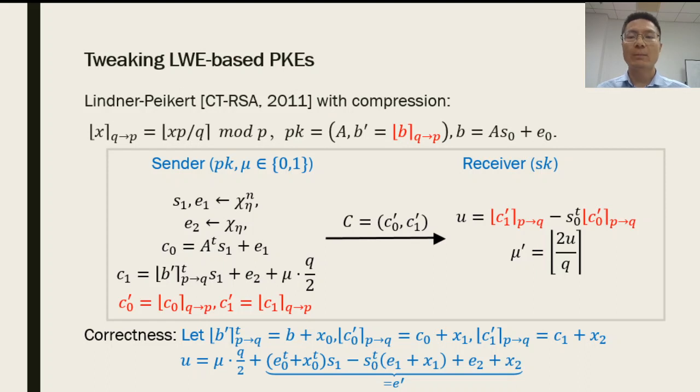If we set the parameter for achieving a given security, there usually exists much room for the decryption noise. In other words, the size of the decryption noise might be far smaller than q over 4. Then, we can use the compression function to obtain shorter public key and ciphertexts, which basically cuts off the lower bits of the public key and ciphertexts. This operation can reduce the size but will result in a much larger decryption noise. This is okay as long as the final decryption noise is still less than q over 4.